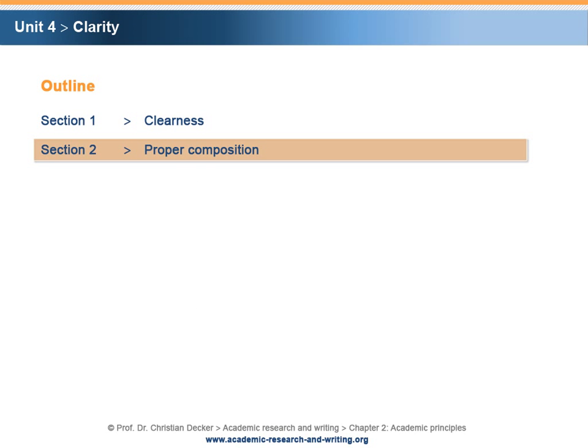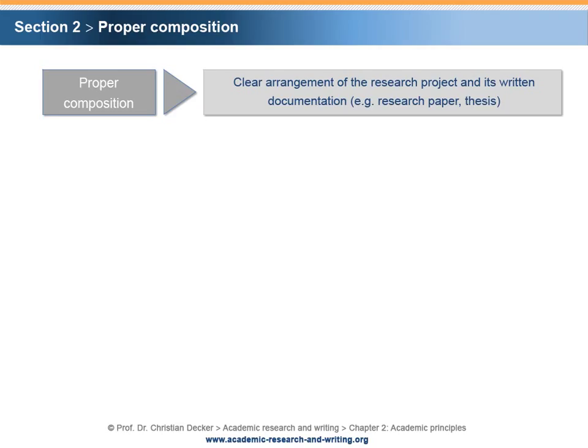Section 2 – Proper composition. Proper composition means the clear arrangement of the research project and its written documentation, like a research paper or a thesis to be handed in for grading. There are several aspects that reflect the proper composition.